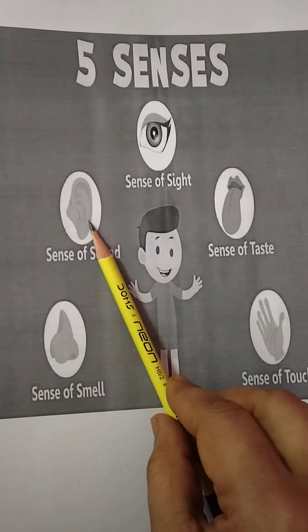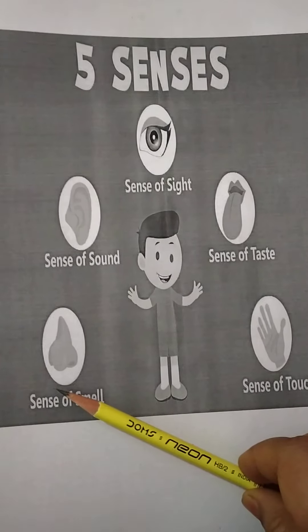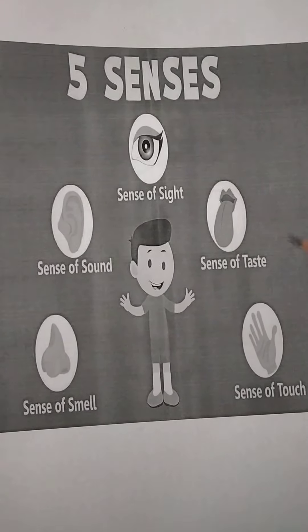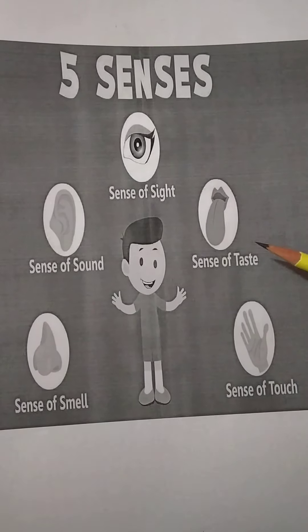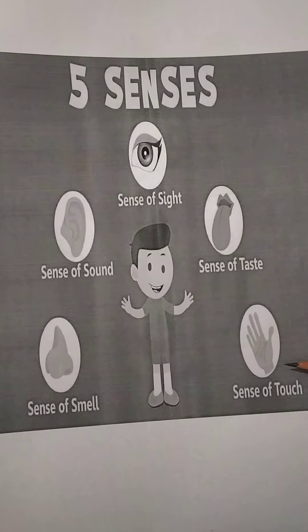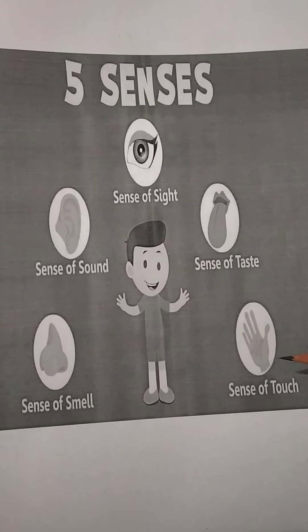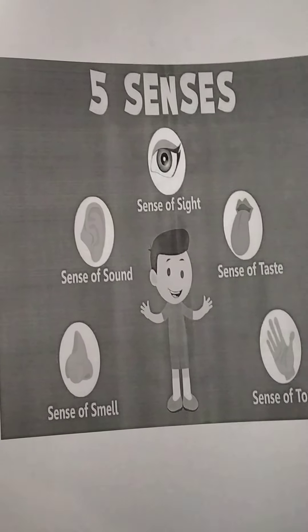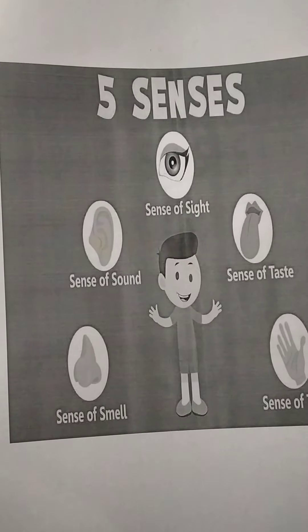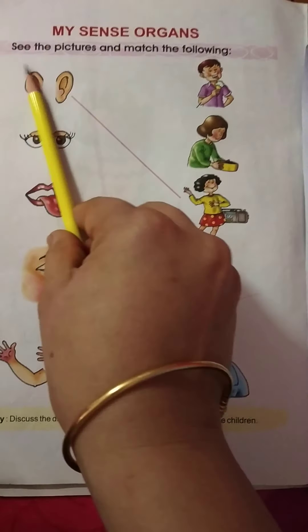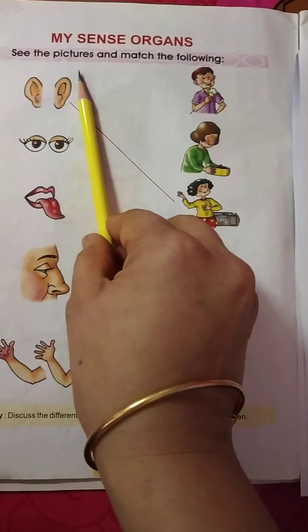These are the five sense organs: sense of sight, which is our eyes; sense of sound, which is our ear; sense of smell, which is our nose; sense of taste, which is our tongue; and sense of touch, which is our skin.